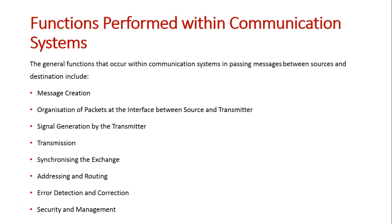As they are listed here, they are in a set order, with message creation being first and then the message being organized into separate data packets. As we go through the stages, some of them that come up towards the end are two-stage processes where a bit happens at the beginning and a bit at the end, such as error detection and correction. The error detection is applied at an earlier stage and then checked at a later stage.